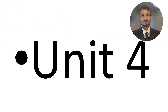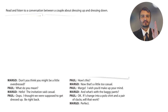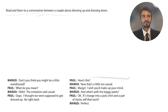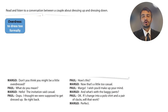Unit 4. There's a conversation between a couple about dressing up or dressing down. 'Dress up' means to wear formally; 'dress down' means to wear casually. Margot starts: 'Don't you think you might be a little overdressed?' 'Overdressed' means too much formal. The invitation said casual — meaning you have to wear casually.